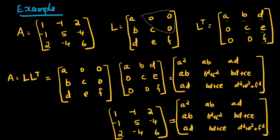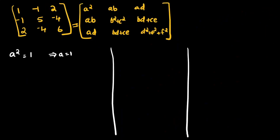Comparing A with the L·Lᵀ product: the element 1 corresponds to A², so A² = 1, giving A = 1 (taking the positive value since diagonal elements of L must be positive). Next, AB = -1; since A = 1, we get B = -1. Off-diagonal elements are not required to be positive, so B can be negative.